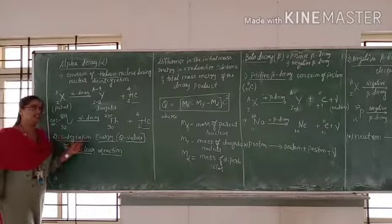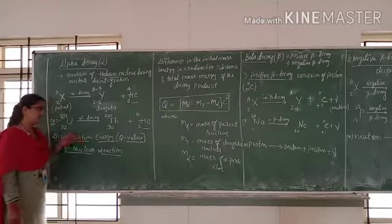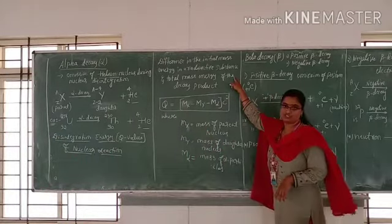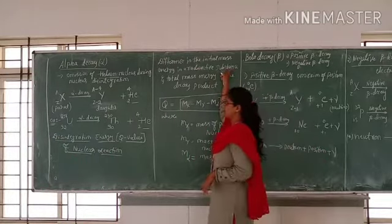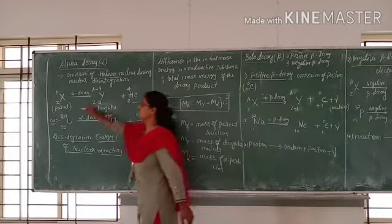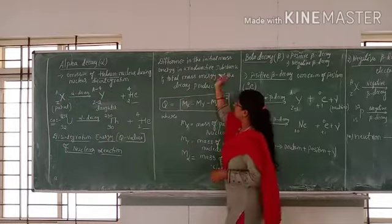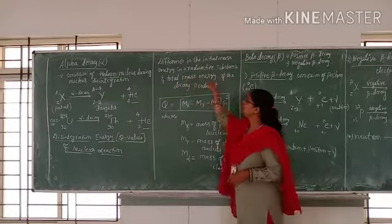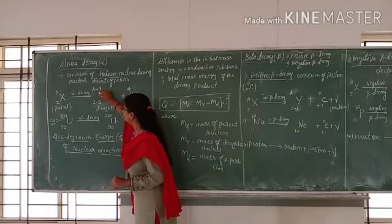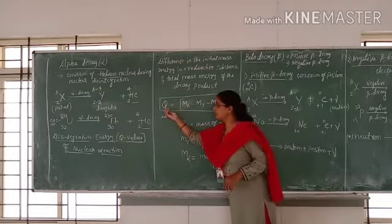The next concept is disintegration energy, or the Q value of the nuclear reaction. This is the difference in the initial mass energy of the radioactive substance and the total mass energy of the decay products. The initial is X, the parent nucleus, and the products are the daughter nucleus and the emitted particle.